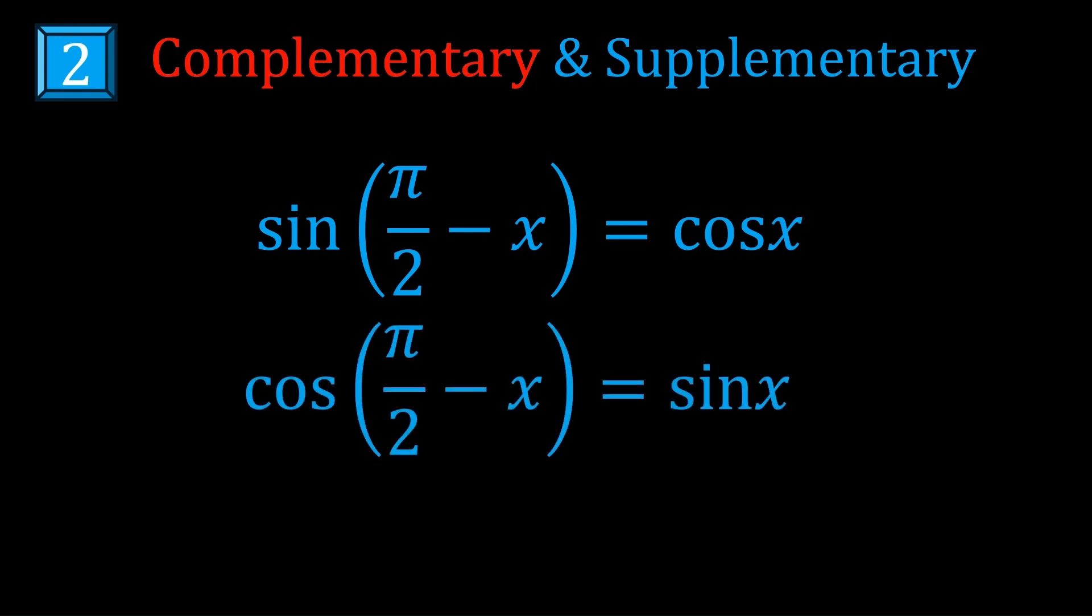At number 2 we have the complementary and supplementary identities. These are overpowered. They come up way too much, so it's really important that you know them. First of all, we have complementary. Sine pi on 2 minus x is cos x, and cos pi on 2 minus x is sin x. How do you remember this?